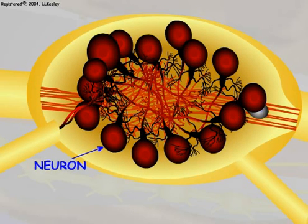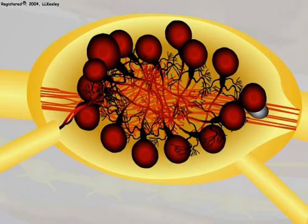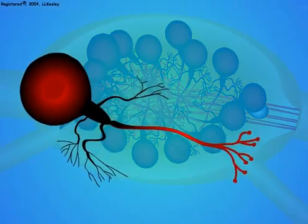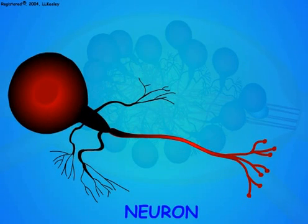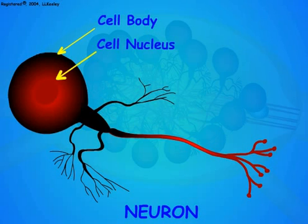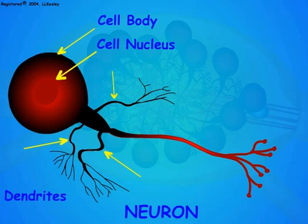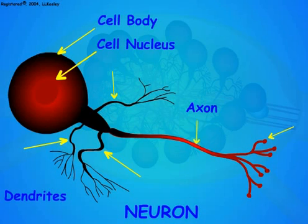Let us see how the nervous system functions by looking more closely at the internal structure of a ganglion. The functional cell of the nervous system is called a neuron, and its role is to receive and transmit information. The neuron consists of a cell body, which is the living part of the cell and contains the nucleus. Dendrites receive information from other neurons or from the sensory system and convey it to the axon, which is a long cellular filament that transmits information throughout the nervous system. The axon ends in tree-like branches that transmit information to the dendrites of other neurons.